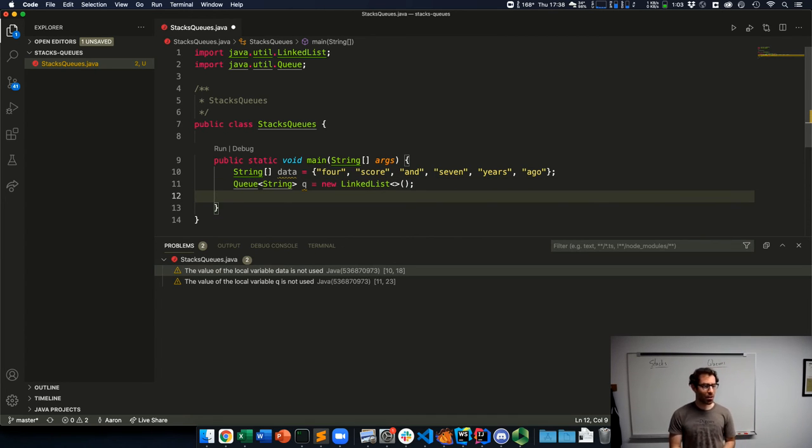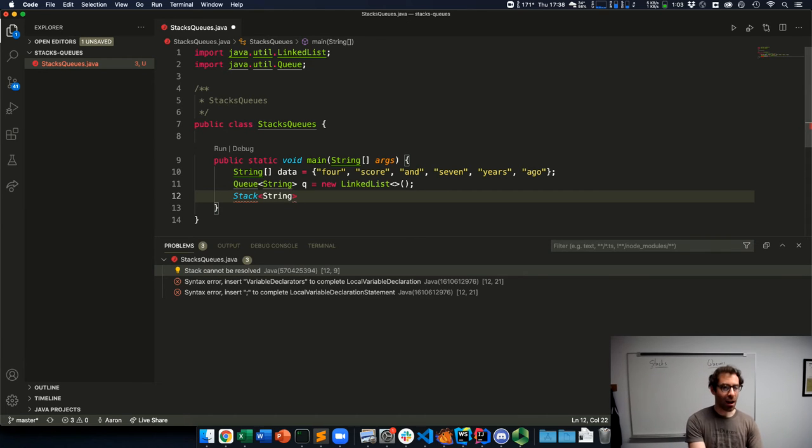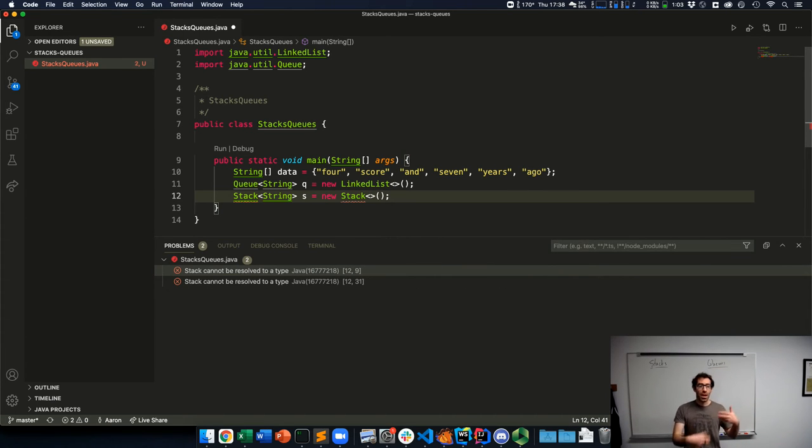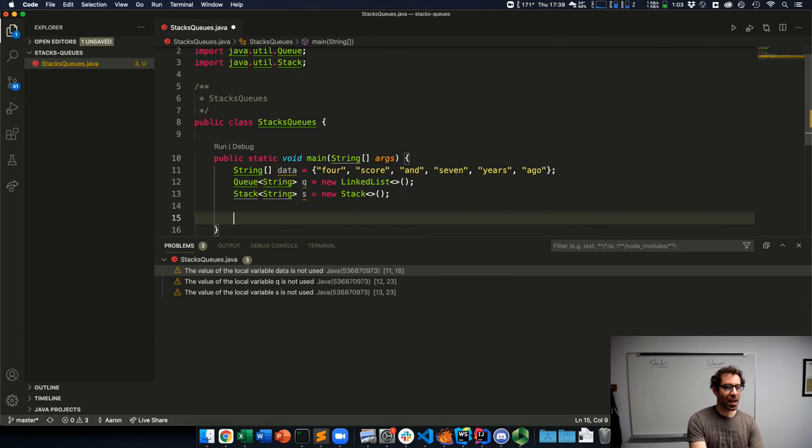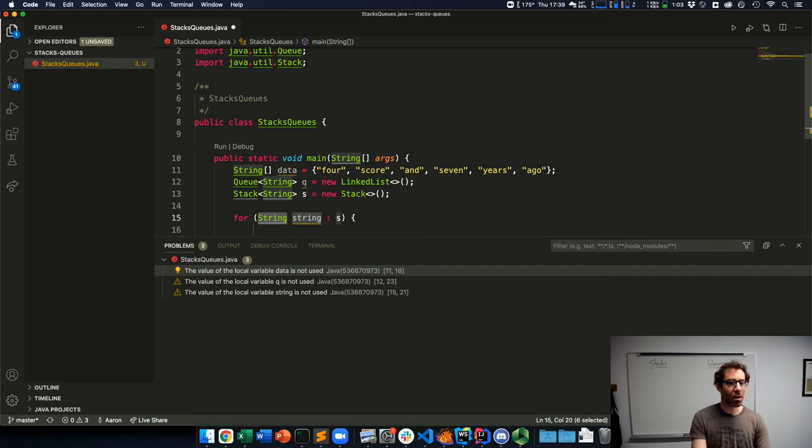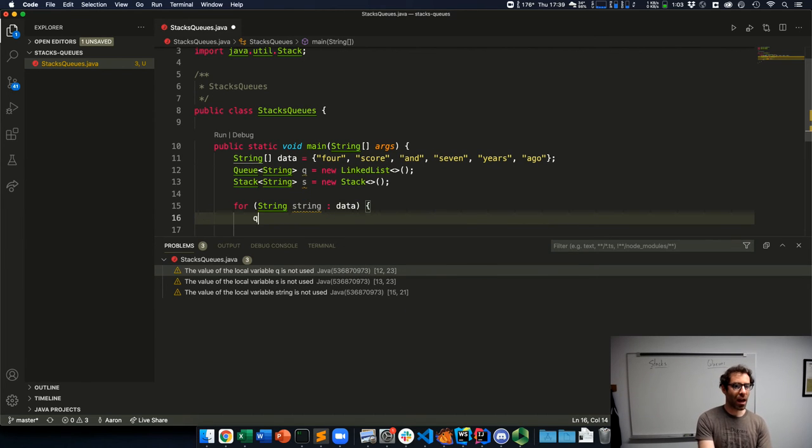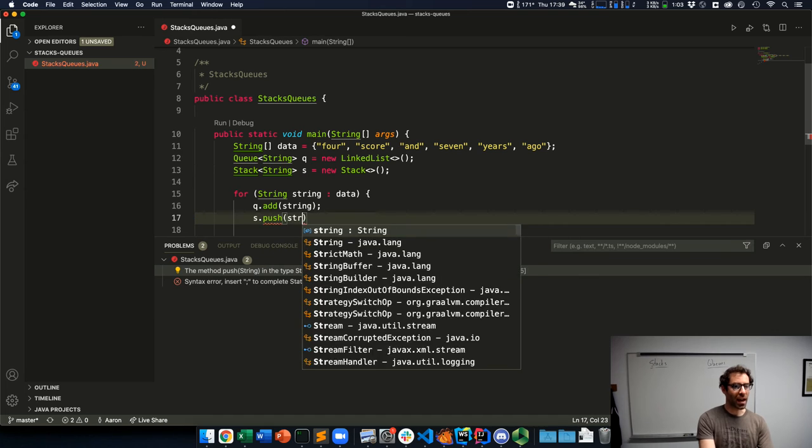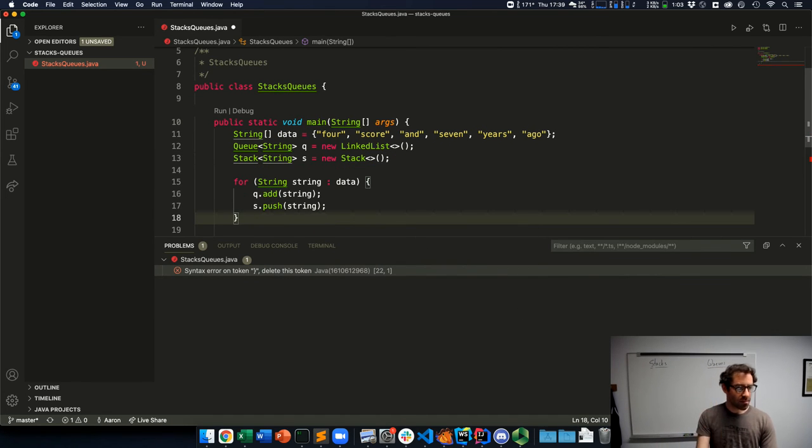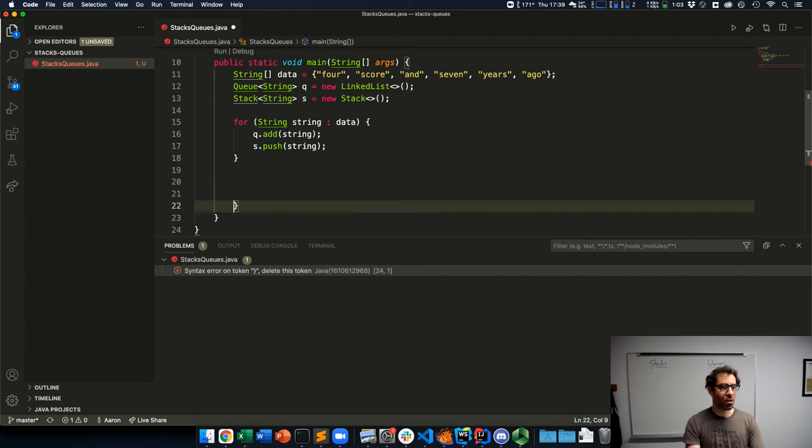However, Java made a bit of a whoopsie in designing its standard library. The stack is actually not an interface, it's a class. It would make sense if both stack and queue were an interface, but unfortunately the Java library did not make the right choice there. All right, so I've created my queue and my stack, and then I'm going to use Java's for each loop to loop over each string in my array data and add it to my queue and push it onto my stack.